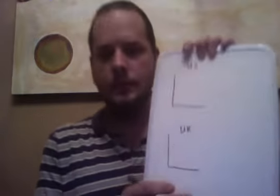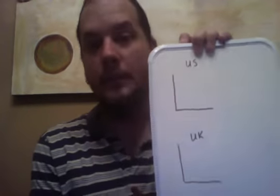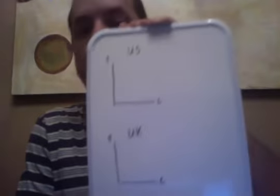We're going to draw a couple of PPFs. I've got United States and U.K., and on the vertical axis I'll track fish production, and on the horizontal axis, chip production. Each country has its own endowment of resources — its own quantity of land, labor, and capital of fixed quality, and different levels of technology. So each country is going to have a unique PPF.